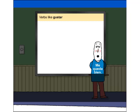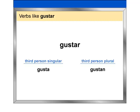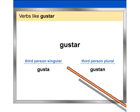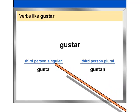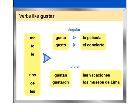The forms most commonly used with gustar and similar verbs are the third person singular and the third person plural. When the object or person being liked is singular, the singular form, gusta, is used, as in these examples: Me gusta la película. Le gustó el concierto.